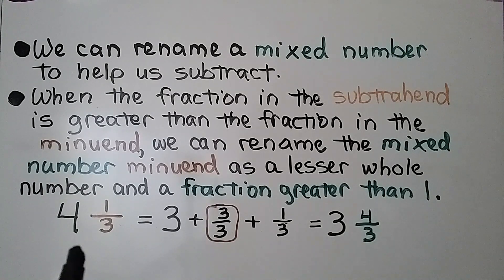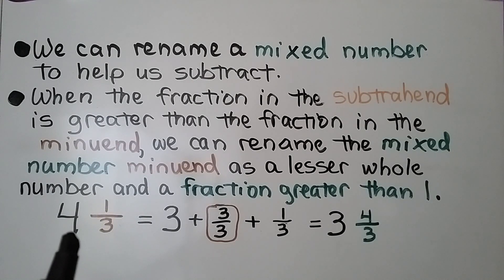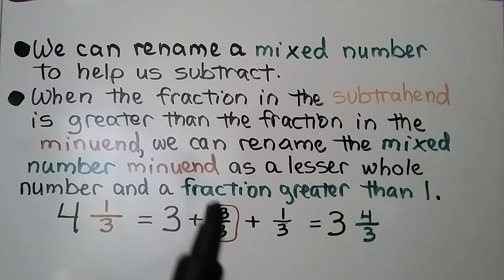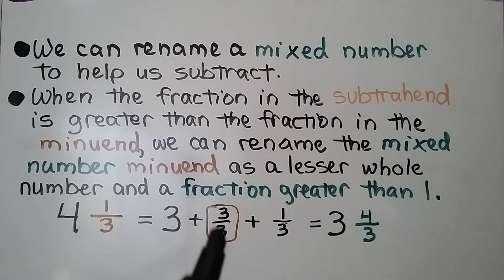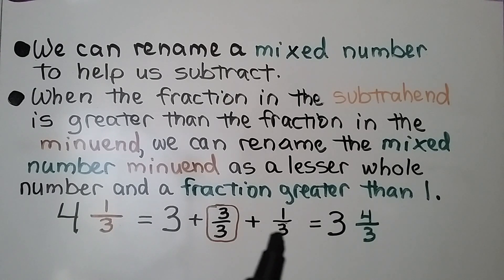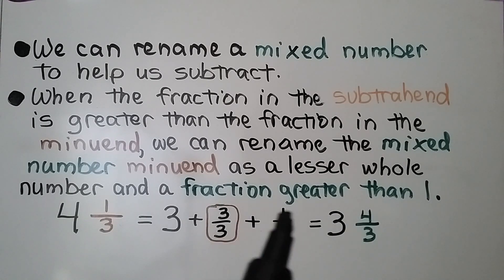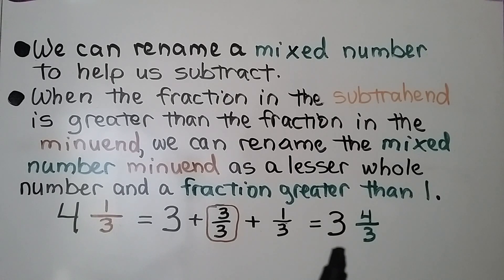If 4 and 1 third is our minuend, we can rename it as 3 plus three-thirds, because we have a denominator of 3. We write three-thirds for that 1. Together this makes the 4, and here's our one-third. We add the numerators: 3 plus 1 is 4, giving us 3 and four-thirds.